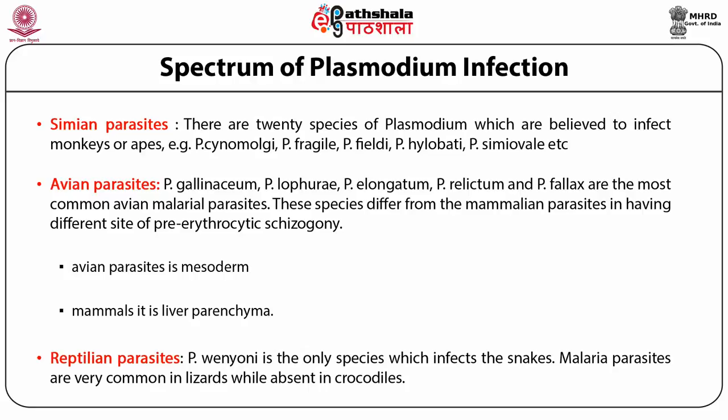Species of malarial parasite that afflict human beings: various species of Plasmodium infect humans to produce different symptoms and periodicity. Plasmodium vivax causes benign tertiary malaria. Primary symptoms include headache, nausea, anorexia, and vomiting. Other symptoms include respiratory distress, shivers, and very high fever.